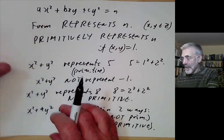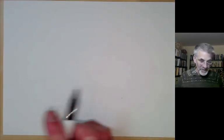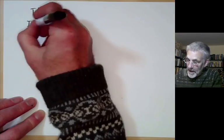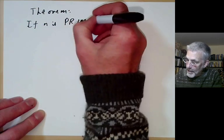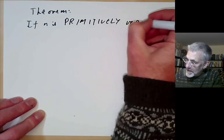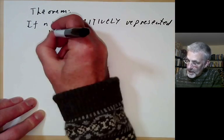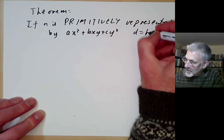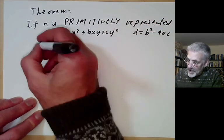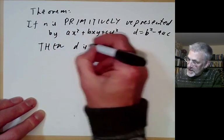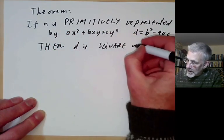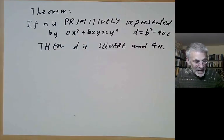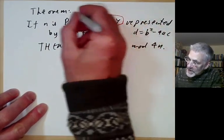We now come to the main reason for introducing primitive representations. The theorem states: if n is primitively represented by ax squared plus bxy plus cy squared with discriminant d equals b squared minus 4ac, then d is a square modulo 4n. Before proving this, let's show we really do need the primitive condition.